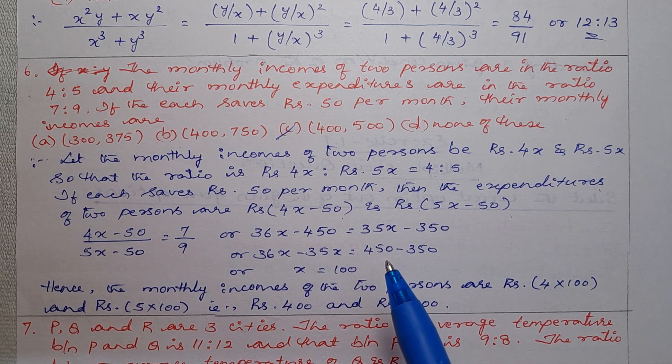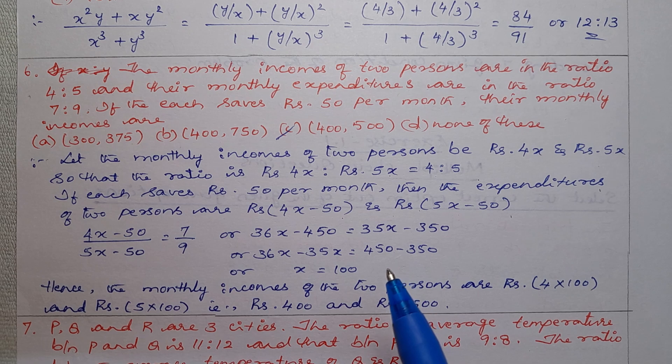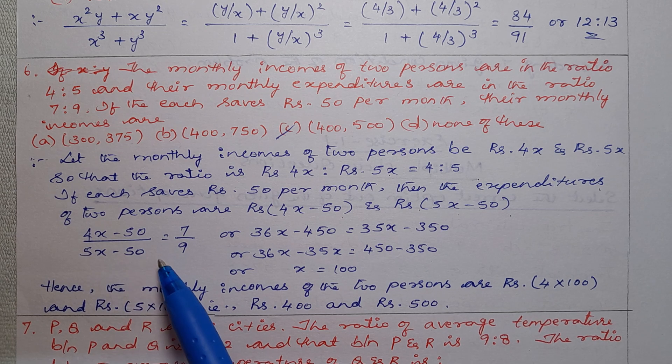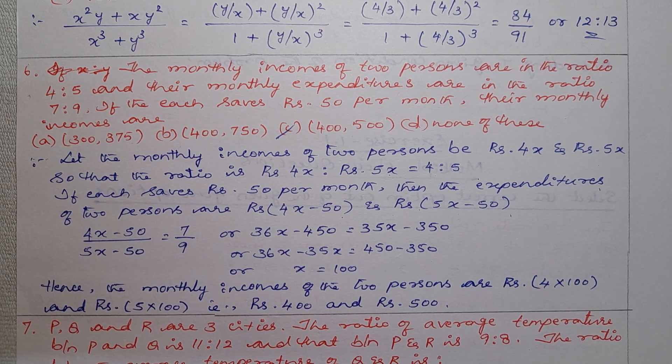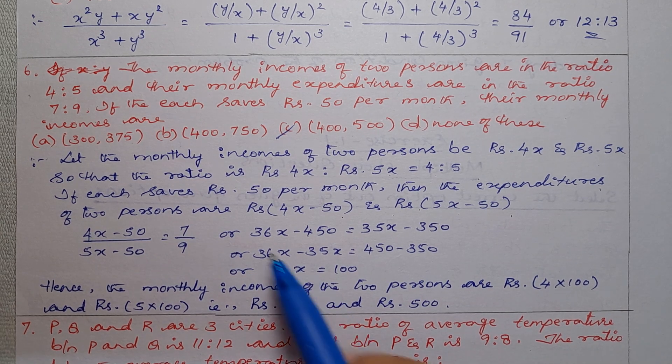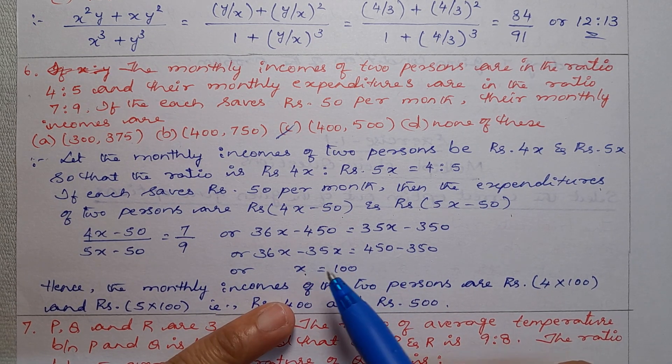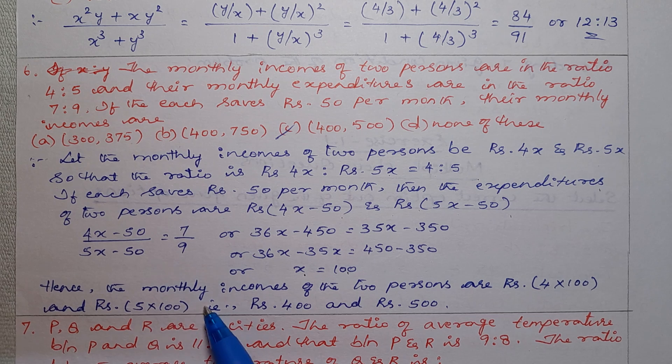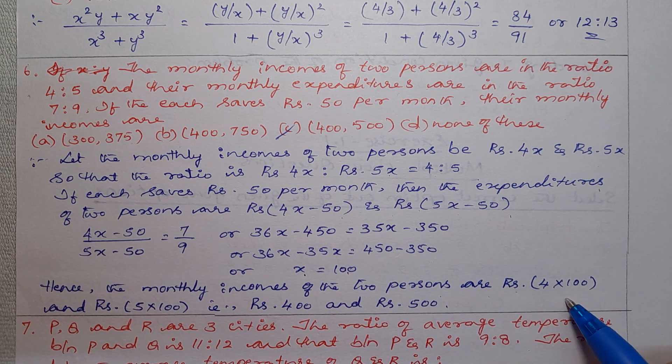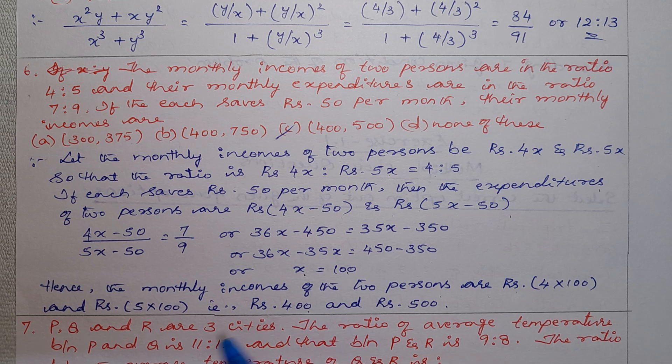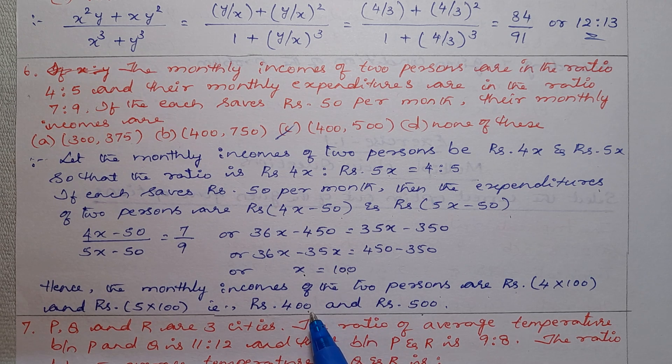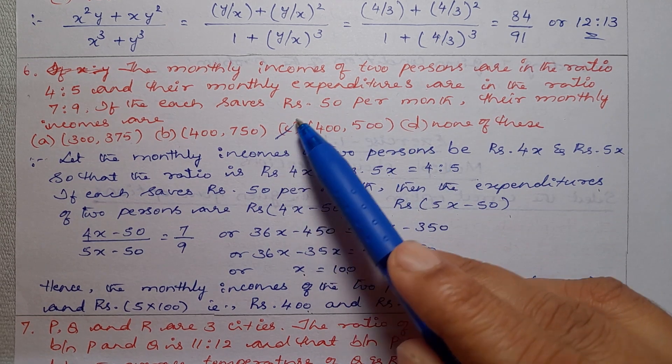Expenditure is 7 to 9, ok. So 4x minus 50 divided by 5x minus 50. x will be 100, so income will be 400 and 500 rupees. So option C is the correct answer.